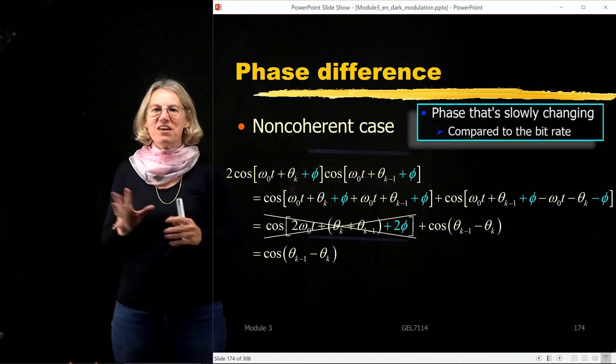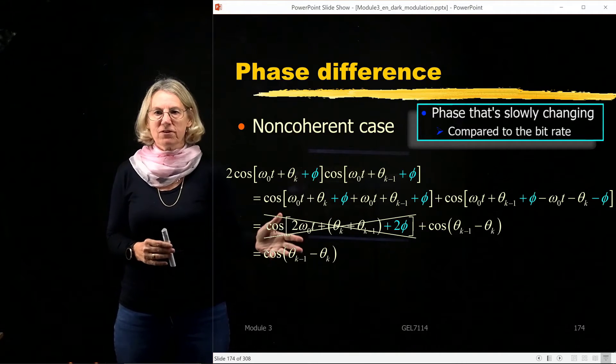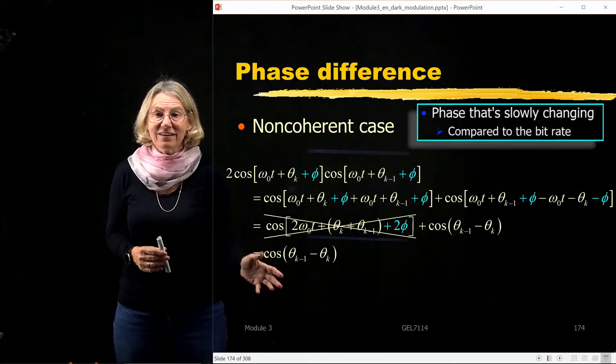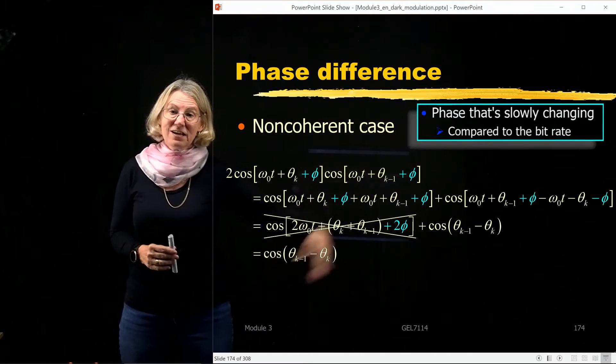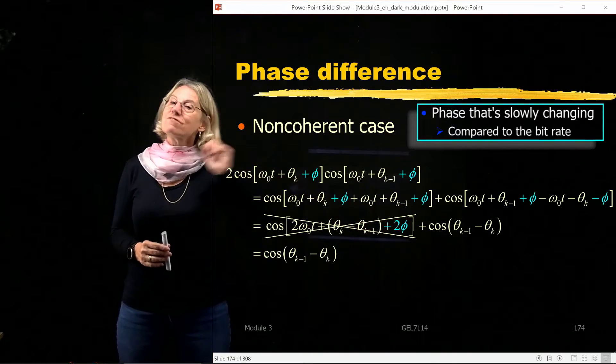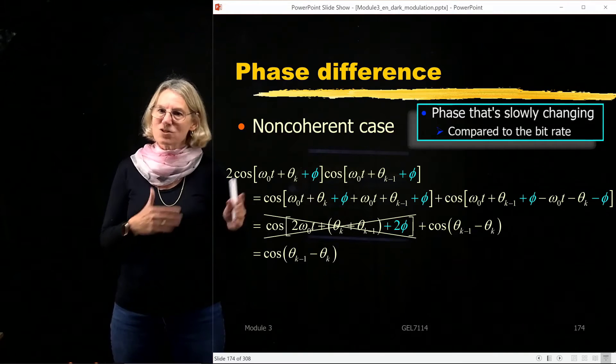You know, whatever that phi was that I didn't know because I didn't pay for a phase-lock loop to be able to track it, it doesn't matter because if I use this strategy, it just goes away. Of course, if the phase is changing very quickly, this wouldn't work.